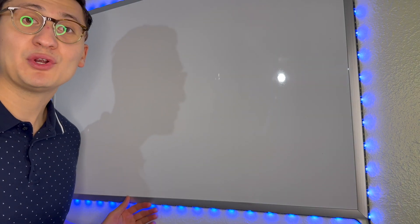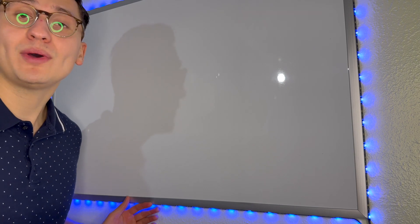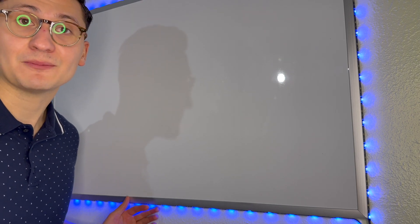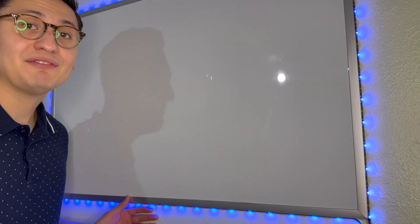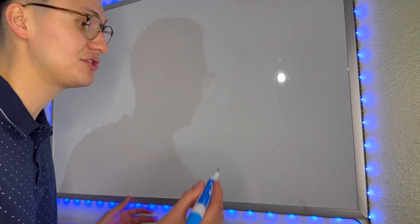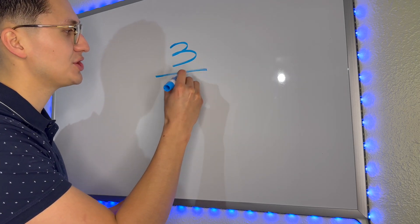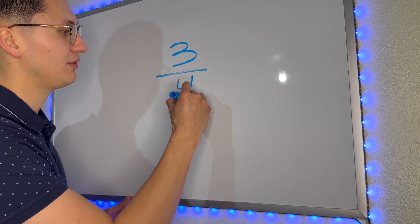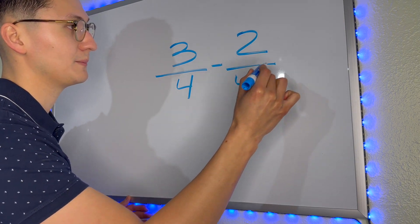All right guys, if you're enjoying the video and you're learning, go ahead and like and subscribe and comment on what else you'd like to see. Now let's get back to it. Instead of adding, we're going to subtract fractions with equal denominators. So let's say I have the fraction three over four minus two over four.